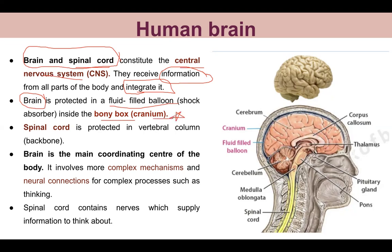The brain is enclosed in a fluid-filled balloon so that it doesn't feel shock - it works like a shock absorber. The brain is inside the bony box called the cranium and is surrounded by fluid. The spinal cord is protected by our backbone. The brain is our main coordinating center, connecting all things and providing signals to every part of the body.